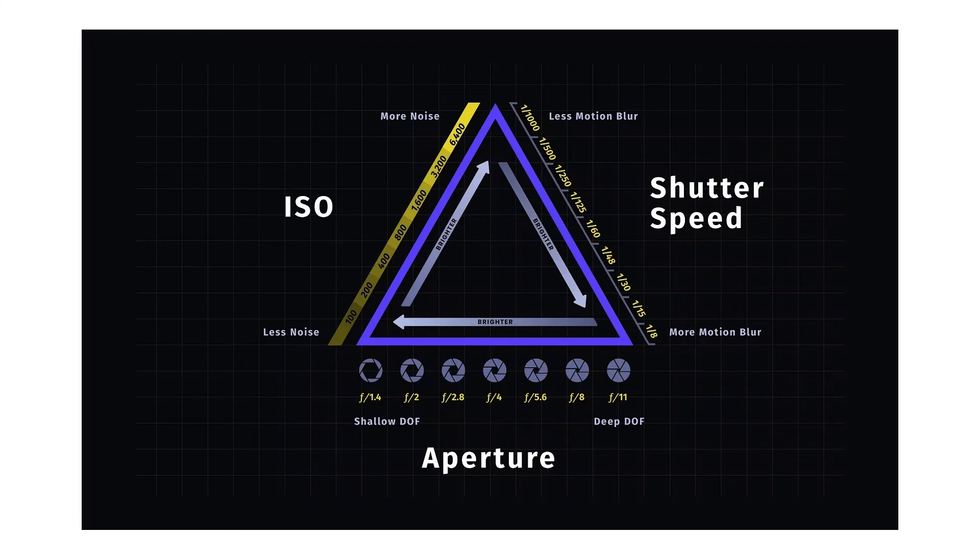All three pertain to one thing: exposing your photo. It's like a team — all three have to be adjusted to properly expose your photo. So you learn what they are, you learn what they do, and now you've got to take them into practice to get comfortable with what they do in the given settings you might be shooting at — what works and what doesn't. That's lesson one.